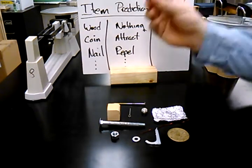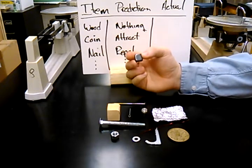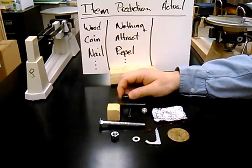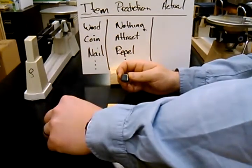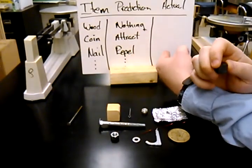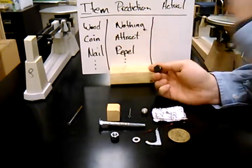So here I have a magnet, and I will simply touch an item and see if it is attracted, repelled, or nothing happens. The first is a nail. The nail is attracted. So what I would do is I'd find the nail, and I said in my prediction that it would repel, but I would put in the actual that it was attracted. It's okay if your predictions are wrong.